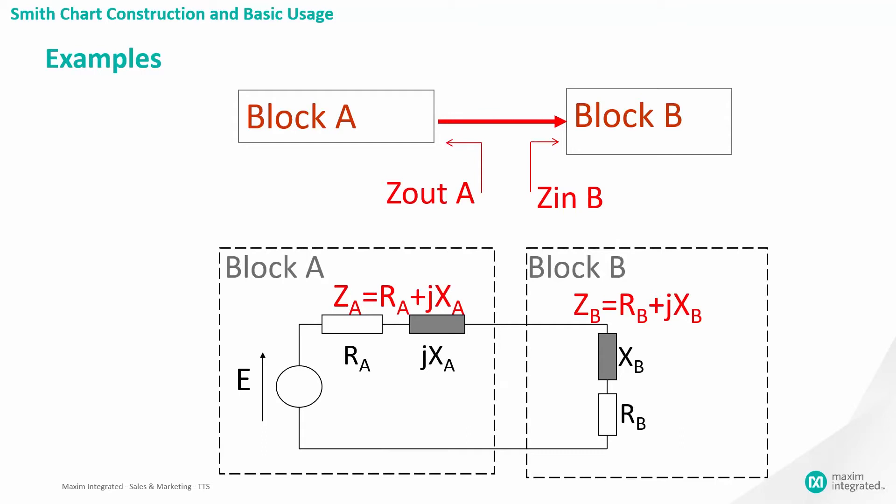Let's take a look at a basic example to start, where block A has an internal complex impedance ZA, which is driving block B with an internal impedance ZB. Each impedance will have some purely resistive component R and some reactive component JX. Thus, ZA and ZB can be labeled as RA plus JXA and RB plus JXB, respectively.